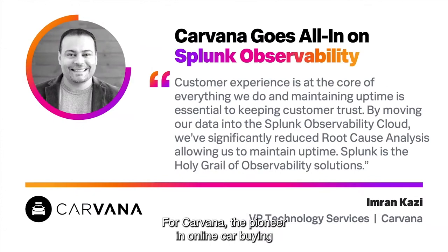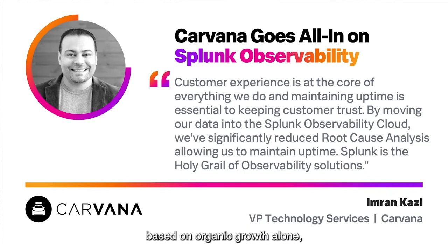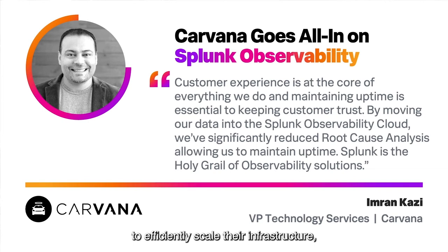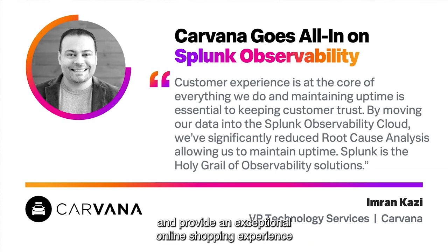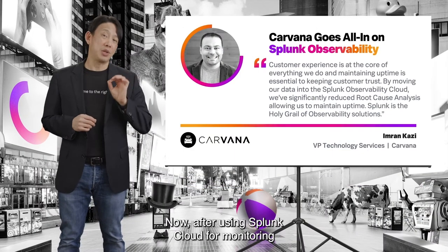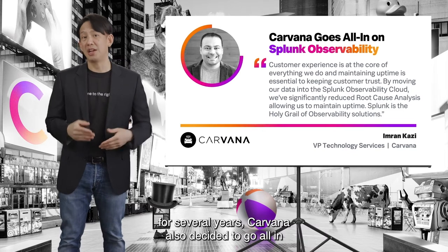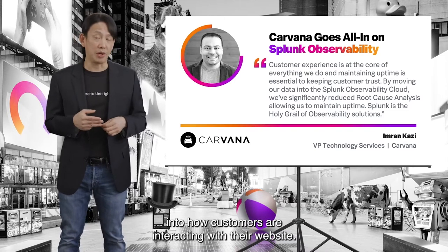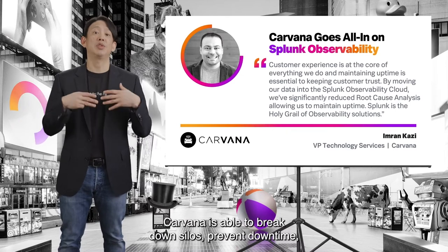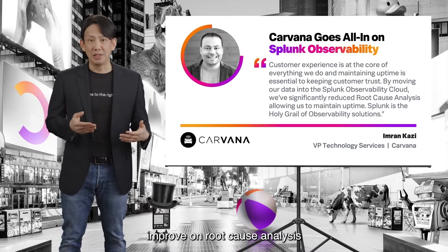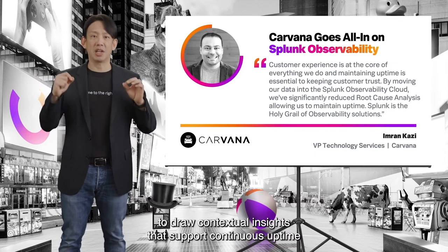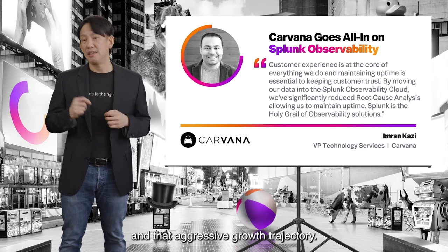For Carvana, the pioneer in online car buying and the third fastest company to reach the Fortune 500 based on organic growth, outages that impact customers' car shopping can be very costly. They needed a real-time, full-stack monitoring solution to efficiently scale their infrastructure, support rapid growth, and provide an exceptional online shopping experience. After using Splunk Cloud for monitoring for several years, Carvana went all-in on Splunk Observability. Splunk gives Carvana real-time, end-to-end visibility into how customers are interacting with their website, breaking down silos, preventing downtime, improving root cause analysis, and gaining full-stack visibility into microservices.